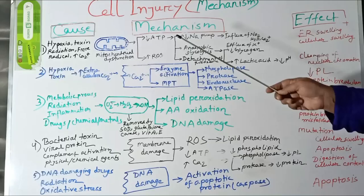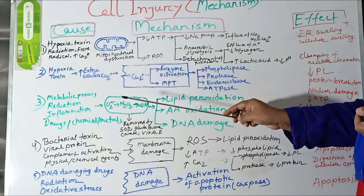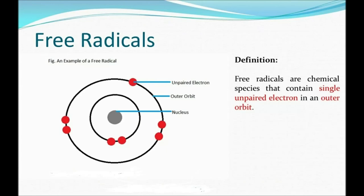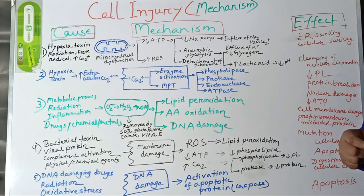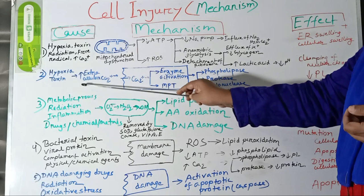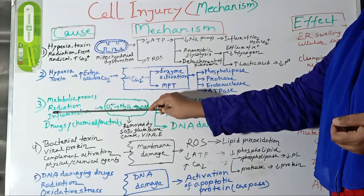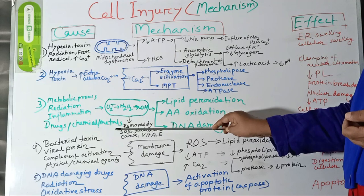Another important biochemical pathway of cell injury is production of free radicals, that is, oxidative stress. Free radicals are chemical species that have a single unpaired electron in an outer orbit. This unpaired electron is highly reactive and can attack biomolecules of cells including proteins, carbohydrates, and lipids. Molecules that react with free radicals are converted into free radicals, propagating a chain of damage. Free radicals are produced within cells by various metabolic processes, absorption of radiant energy, inflammatory processes, and enzymatic metabolism of drugs, chemicals, and metals.